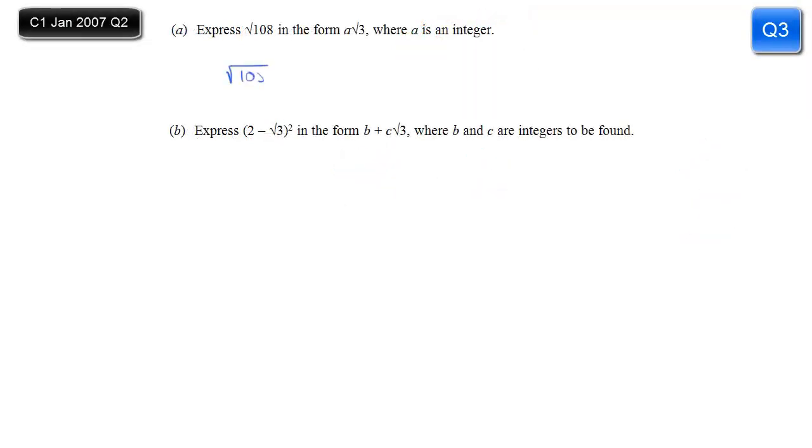Right, there are two parts to this question. The first one asks us to express square root of 108 as a root 3, so something root 3. We need to split 108 into a product of two factors, ideally one of which will be a square number, and the other of which will be 3. And in this case, it's 36 times 3.